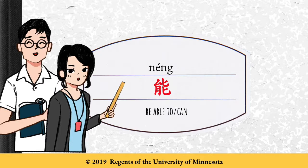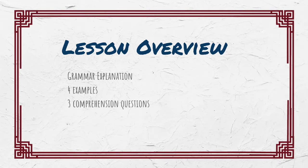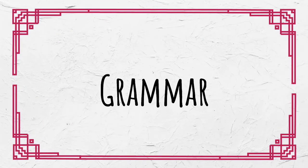大家好. In this lesson, we will introduce 能, which means to be able to or can. This lesson presents a short grammar explanation, examples, and comprehension questions. Now let's move on to the grammar.